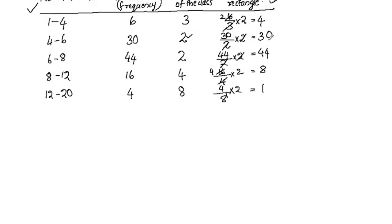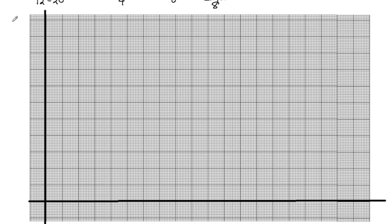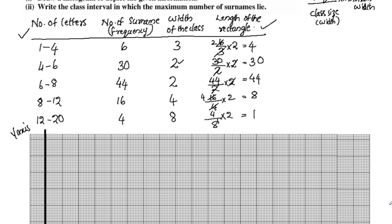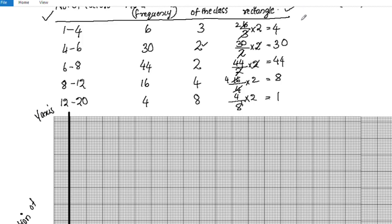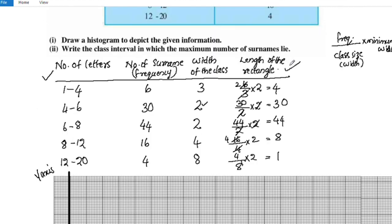Now we have a graph with x-axis and y-axis. The x-axis represents the number of letters and the y-axis represents the proportion of surnames. The length of the rectangle is used to plot values. The maximum adjusted frequency is 44.